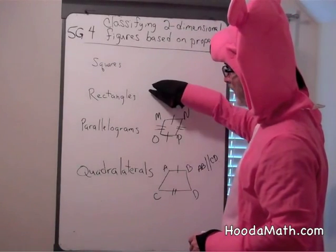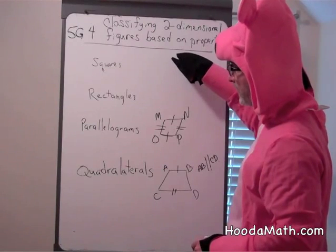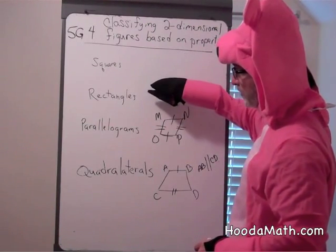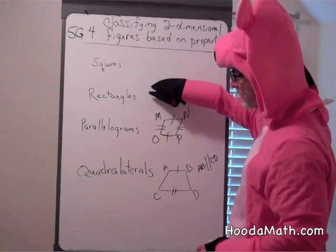All squares are rectangles because opposite sides of squares are equal, just like a rectangle. And there are four 90-degree angles, just like a rectangle.